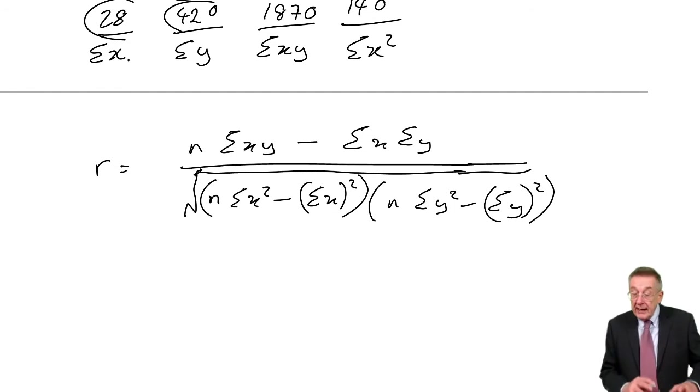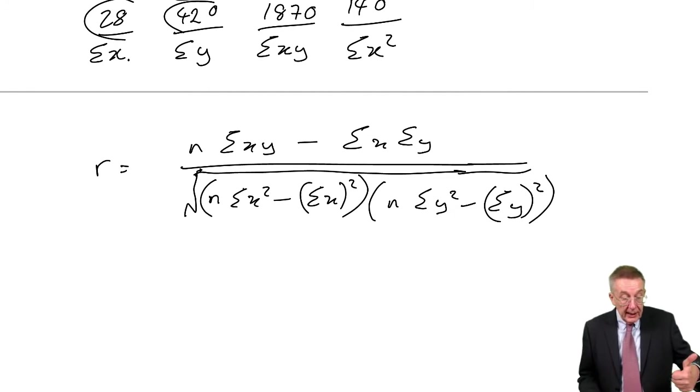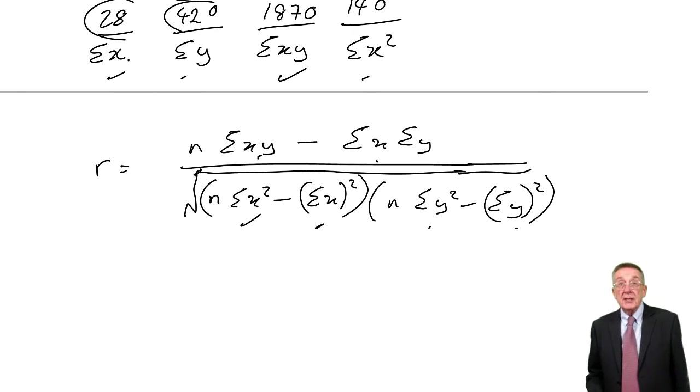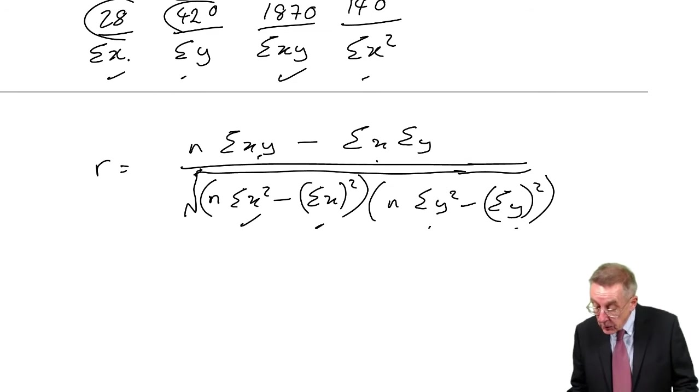Now, already in the previous lecture, we've got most of the figures we need. We know n is seven, the number of sets of observations. We already know sigma xy, we know sigma x, sigma y, we know sigma x squared. The one extra thing we're going to need is sigma y squared.